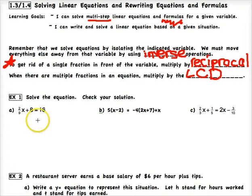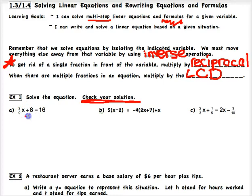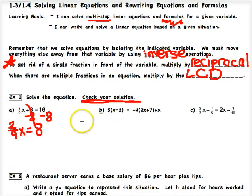Example 1a: solve the equation and check your solution. When it says check your solution, plug your answer back in mentally or in your calculator to make sure it's right. We have 2/9 x + 8 = 16. We want to get x alone, so we subtract 8 from both sides. The +8 cancels on the left, leaving 2/9 x, and 16 minus 8 is 8 on the right. So now I almost have x alone — that 2/9 in front is the only thing keeping x from being alone.